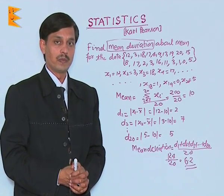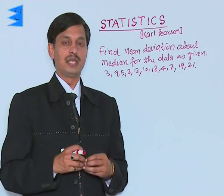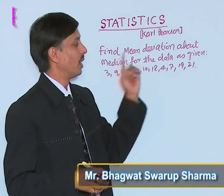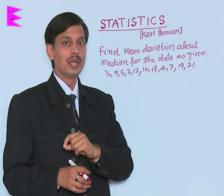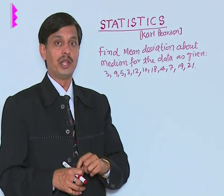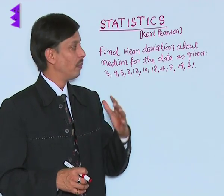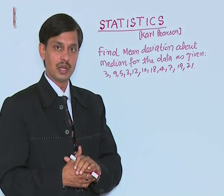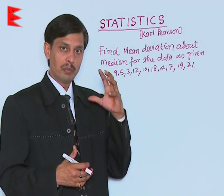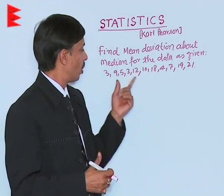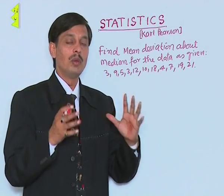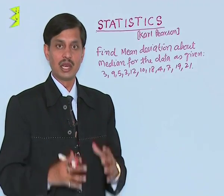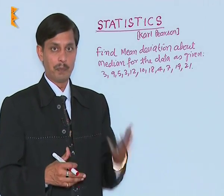Now I am taking another example where I will calculate the mean deviation about the median instead of the mean. To calculate the mean deviation about the median of the given data, we first need to calculate the median. Methods of finding the median were also explained in the previous class.